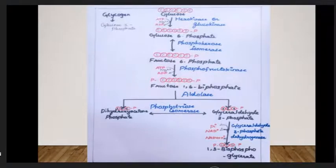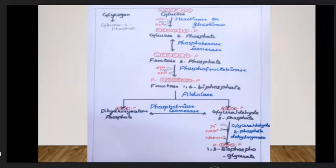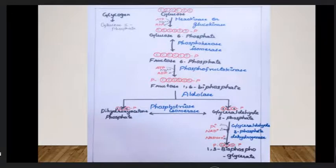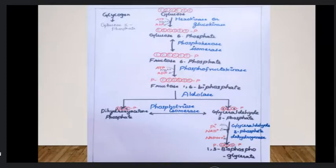Glyceraldehyde-3-phosphate (G3P) undergoes dehydrogenase reaction. NAD+ is reduced to NADH + H+. Inorganic phosphate is added to the first carbon, producing 1,3-bisphosphoglycerate.